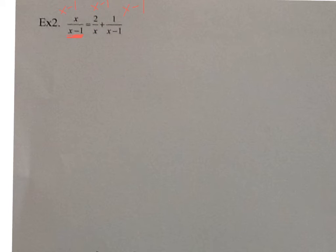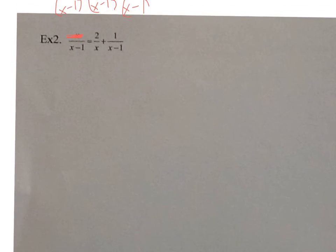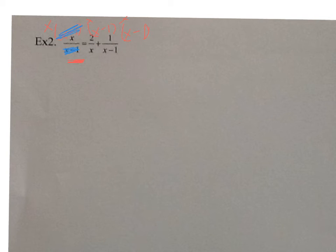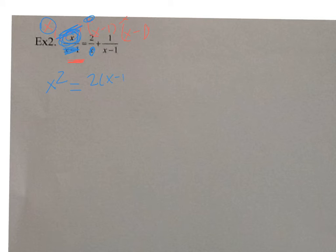So how do I get rid of this single x? I need a single x. So everyone gets an x. Now this x will cancel out with this x. So now we're going to reduce. x minus 1 reduces with x minus 1, so I'm left with x and x - that's x squared. And this x reduces with this x, so I'm left with 2 times x minus 1. Then x minus 1 and x minus 1 reduce, so I'm left with 1 times x, which is x.